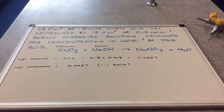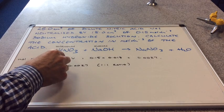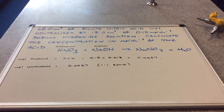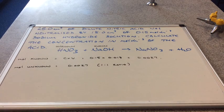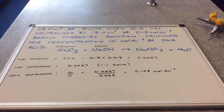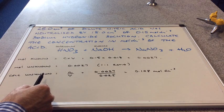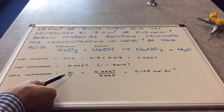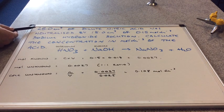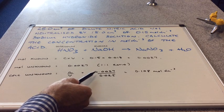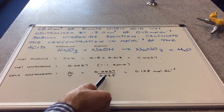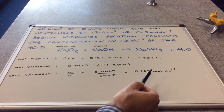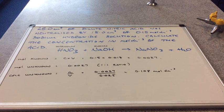There's a nice easy one-to-one mole ratio between the two chemicals. In the balanced equation there are no numbers in front, so one mole of nitric acid reacts with one mole of sodium hydroxide. The moles of the unknown are therefore the same as the moles of the known. Finally, we turn moles into concentration by dividing moles by volume. The volume of the acid is 25 cm³, which is 0.025 dm³, giving a concentration of 0.108 moles per decimetre cubed.